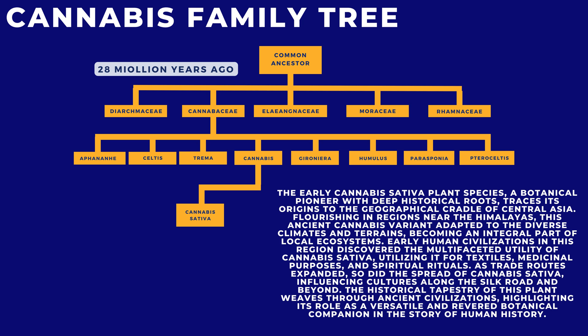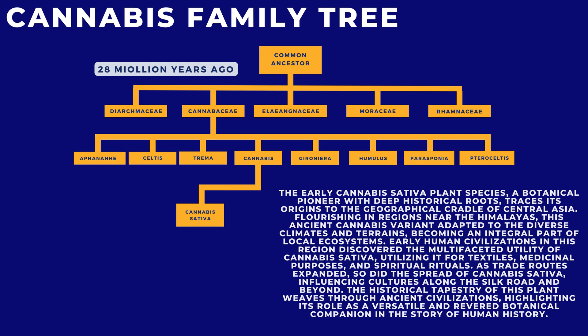Early human civilizations in this region discovered the multifaceted utility of Cannabis sativa, utilizing it for textiles, medicinal purposes, and spiritual rituals. As trade routes expanded, so did the spread of Cannabis sativa, influencing cultures along the Silk Road and beyond. The historical tapestry of this plant weaves through ancient civilizations, highlighting its role as a versatile and revered botanical companion in the story of human history.